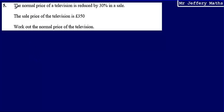This is question five. Here I'm told that the normal price of a television is reduced by 30% in a sale. I'm told that the sale price of the television is £350 and I'm asked to work out the normal price of the television.